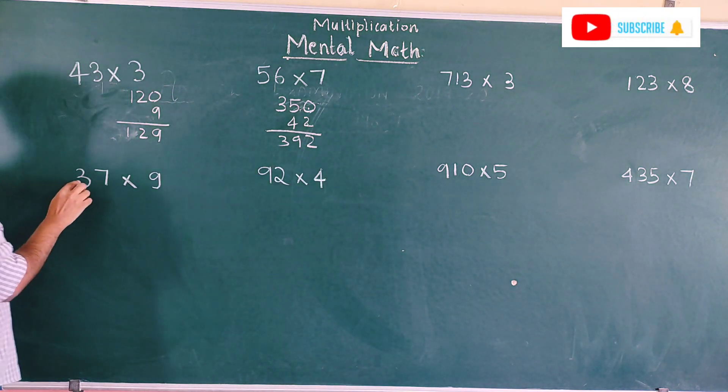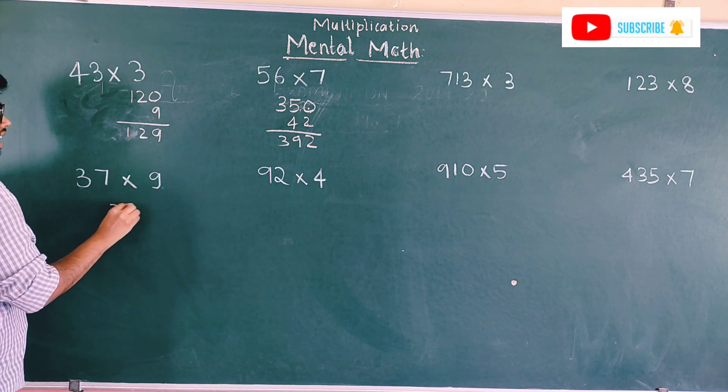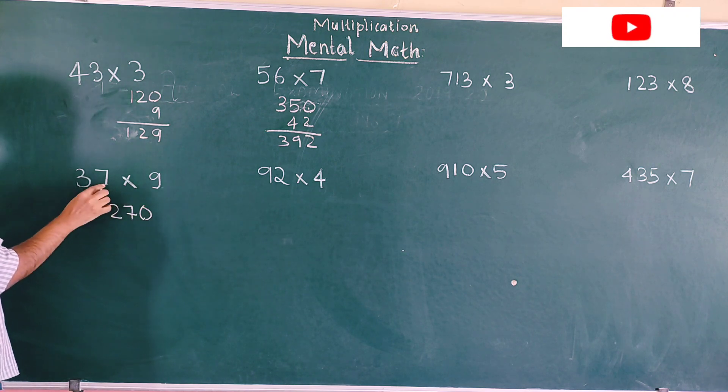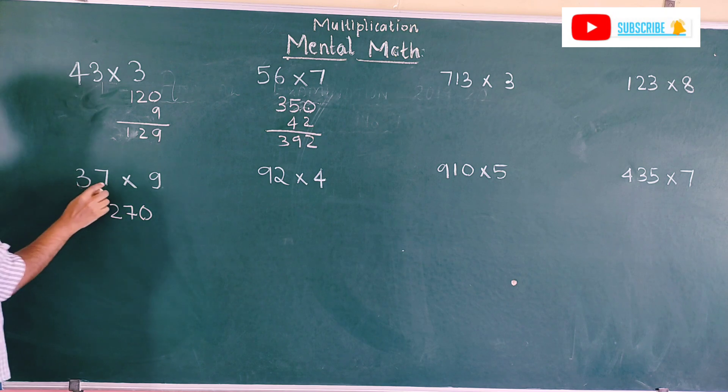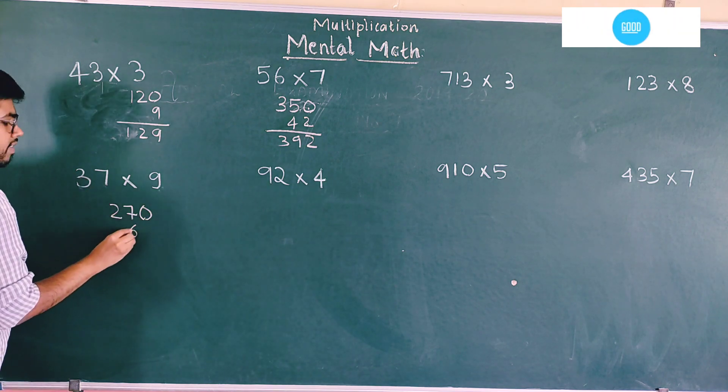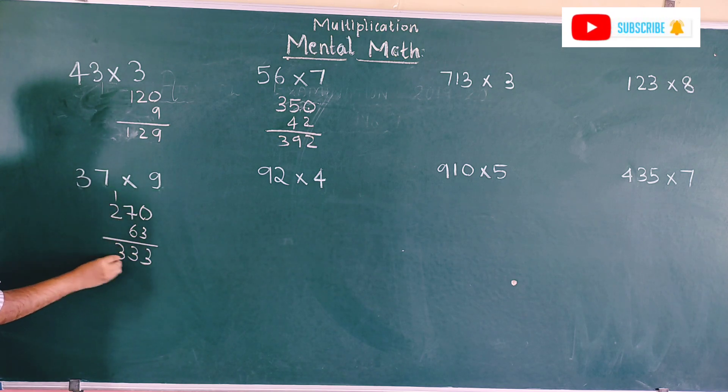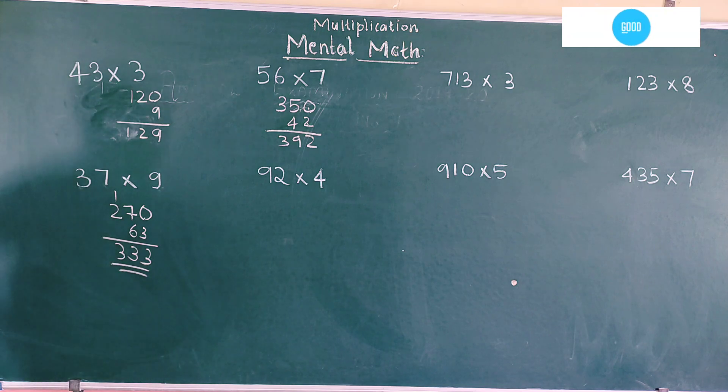Next one. Here, what should you do again? Multiply the tens place 3 into 9. 3 into 9 is 27. Put 1 zero. Why? Because it's the tens place. Next, 7 times 9 is 63. Put 3 here, 6 here. Take 3 here. 7 plus 3 is 13. So 333 would be your right answer.